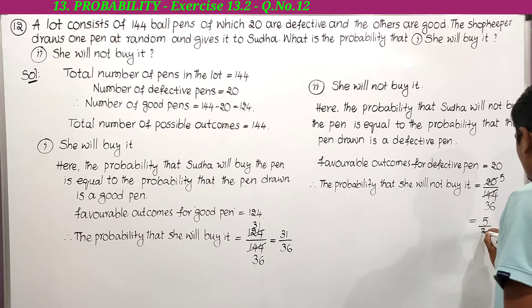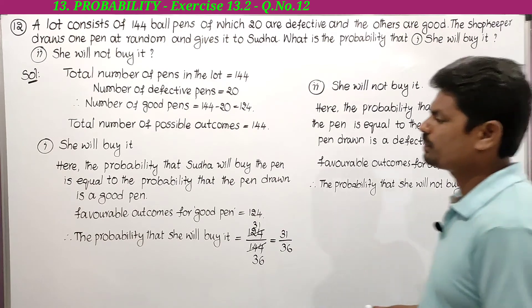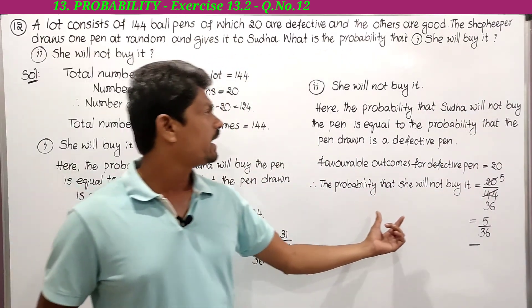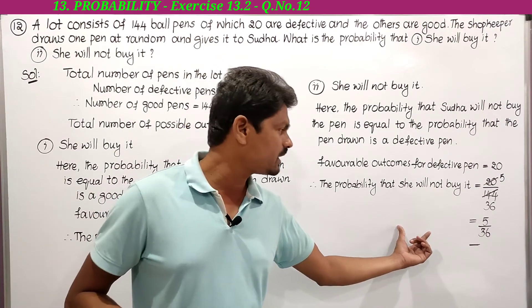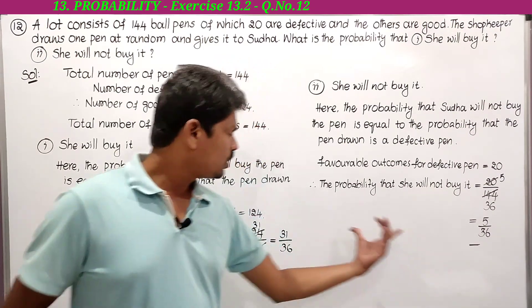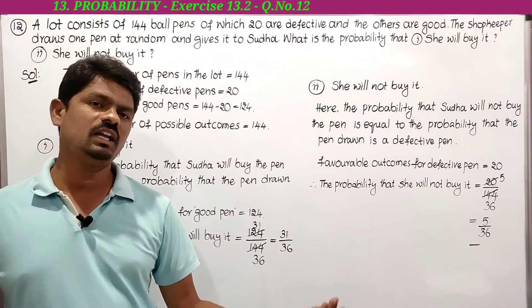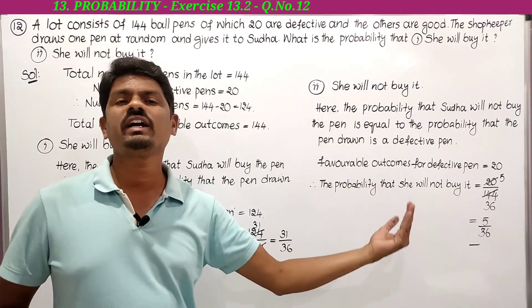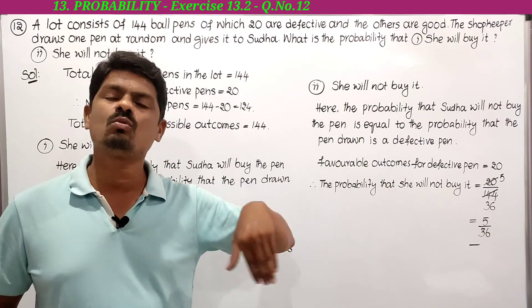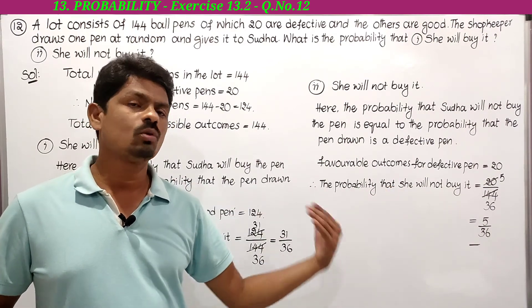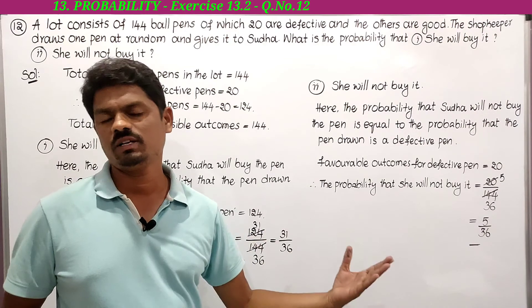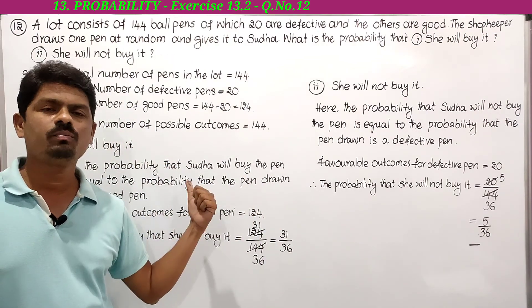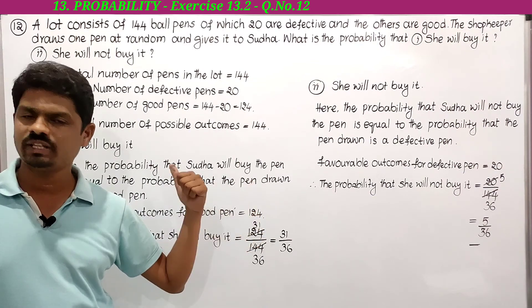So the probability that she will buy the pen is 31/36 and the probability that she will not buy the pen is 5/36. These two are complementary events — P(not E) = 1 − P(E), so we can find the same answer another way. This was the 12th problem in exercise 13.2 — in the next class we will learn the 13th problem. Thanks for watching.